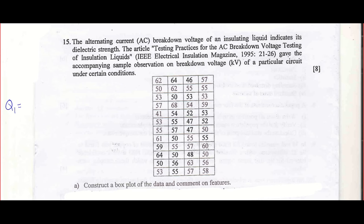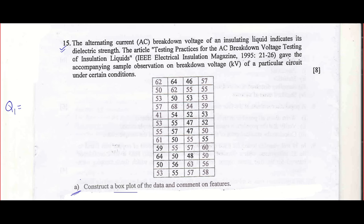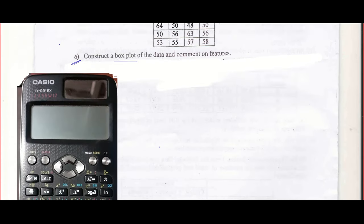Focus on question number 15. They ask you to construct a box plot and they will give you a lot of data items. If you go through the stem and leaf method I showed you in the last video, you may not be able to do it very fast because there are two parts here. I'm doing only part A right now.